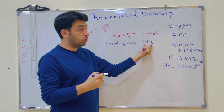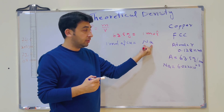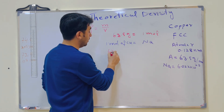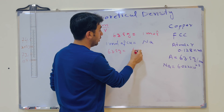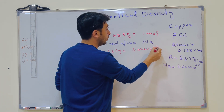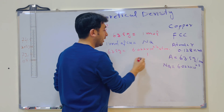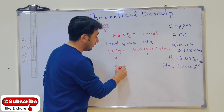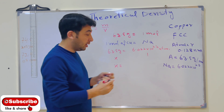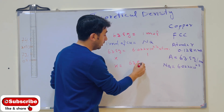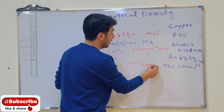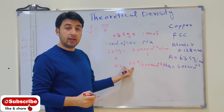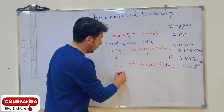So we can write: 6.022 × 10²³ atoms equals 63.5 grams. Therefore, one atom equals x, and by cross-multiplying we find that x — the mass of one atom — is equal to 63.5 divided by 6.022 × 10²³. This gives us the mass of one atom.